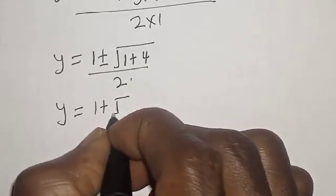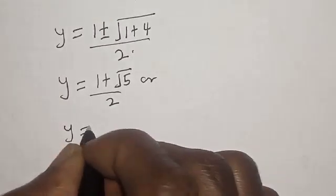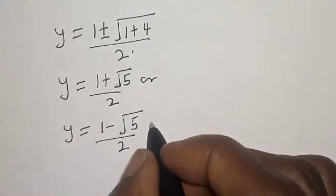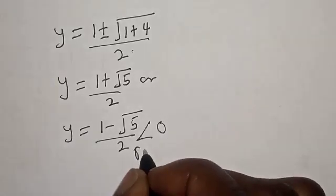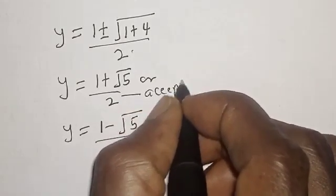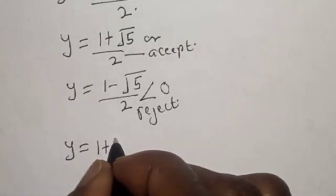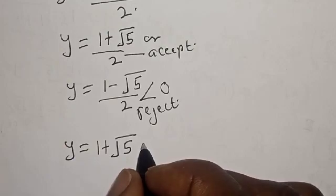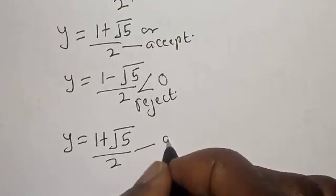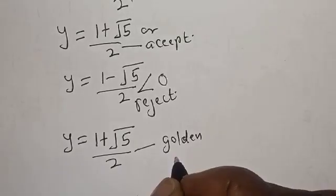So y equals 1 plus square root of 5 over 2, or y equals 1 minus square root of 5 over 2. The second root is less than 0, so we reject it and accept y equals (1 plus square root of 5) over 2. This is called the golden ratio.